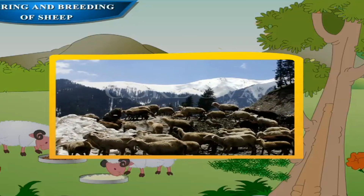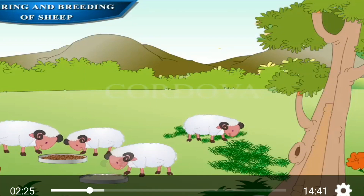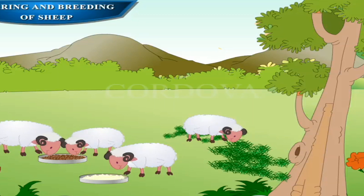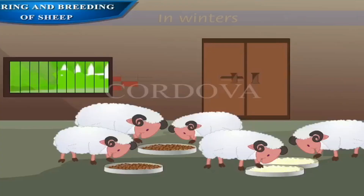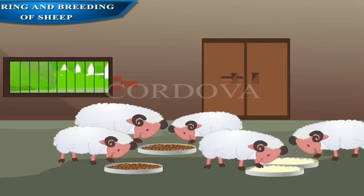The person who looks after the sheep is called a shepherd. Sheep are herbivores and eat mainly grass and leaves. Shepherds take herds of sheep to open grasslands for grazing. Apart from grazing grass, the sheep are also fed a mixture of pulses, corn, jowar, and oil cakes. In winter, sheep are kept indoors and fed on leaves, grain and dry fodder.